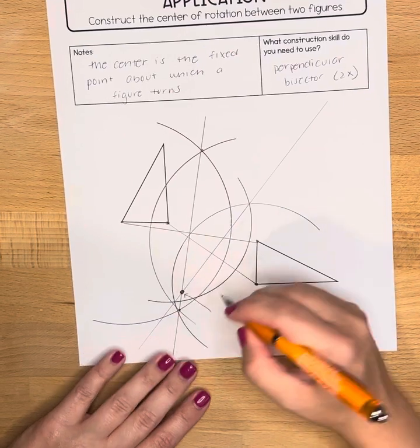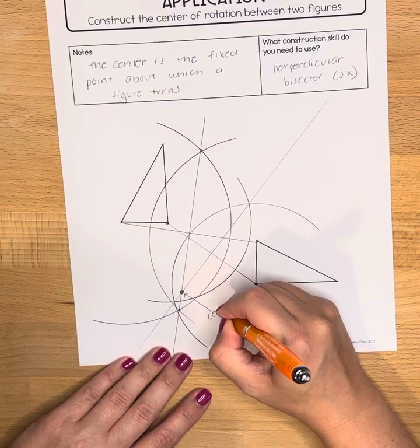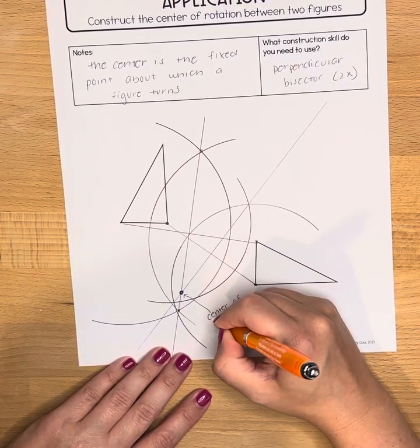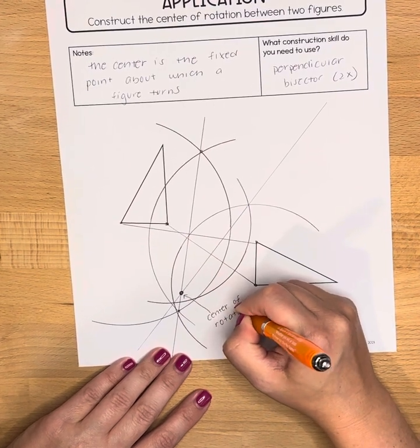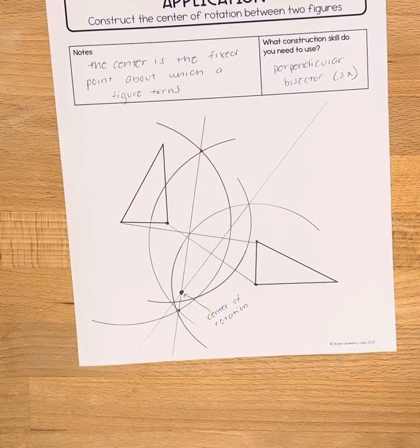So there's a lot of intersections in here, but we're looking for where those two perpendicular bisectors actually crossed. And that is your center of rotation.